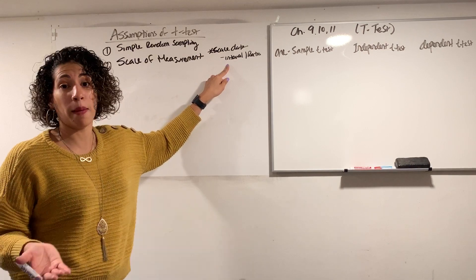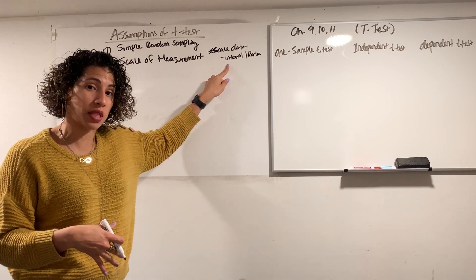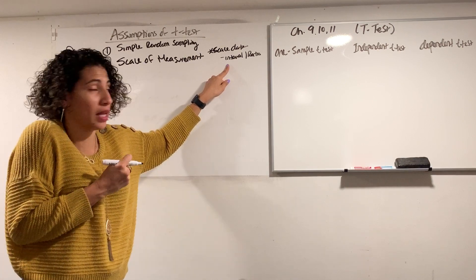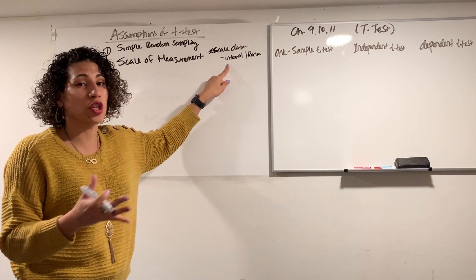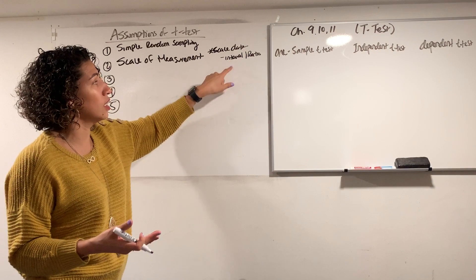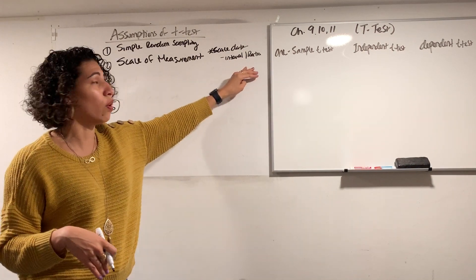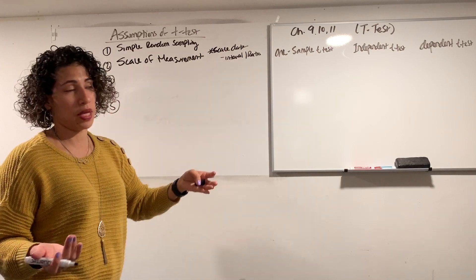But when you think about something like temperature, can you go below zero in temperature? You can. You can have like negative 30 as a temperature, meaning it's freaking cold. So you can go below zero. That's interval data. So data that produces numbers that can either have an absolute zero or no zero are actually called scale data in SPSS.